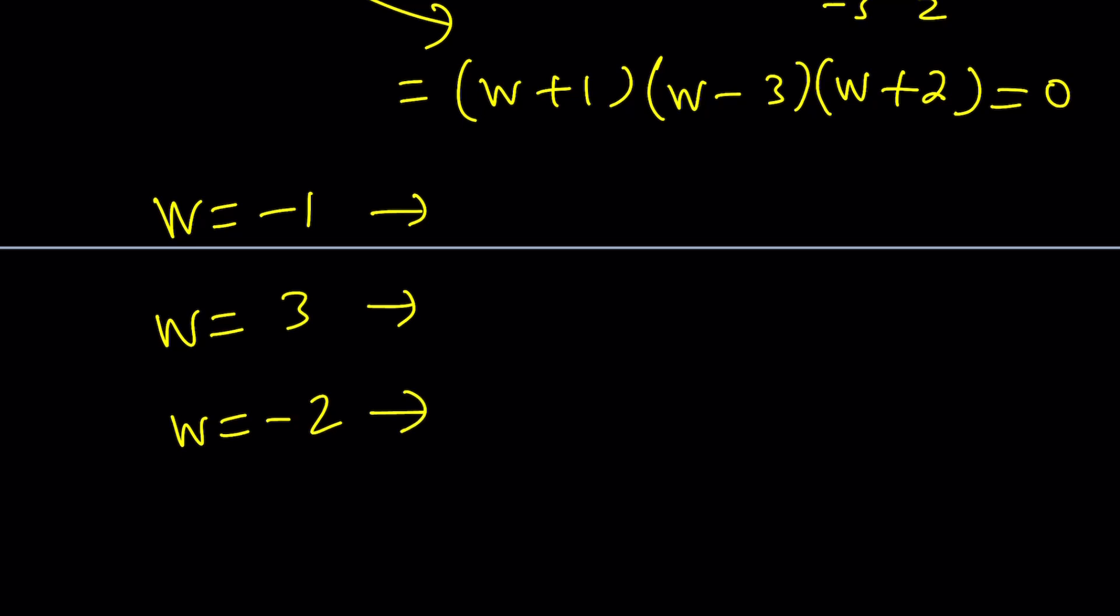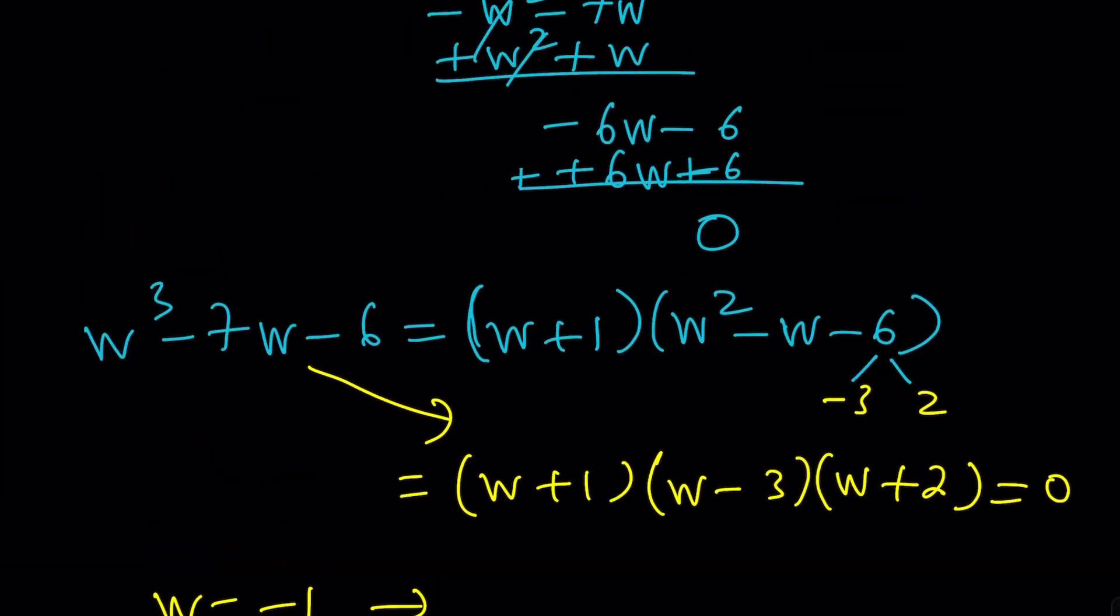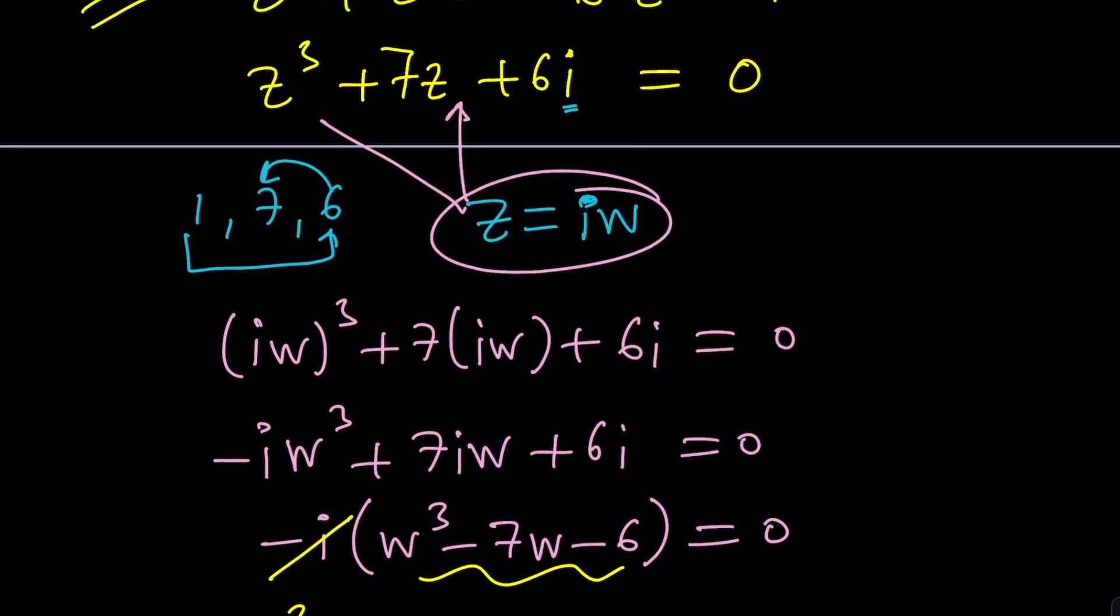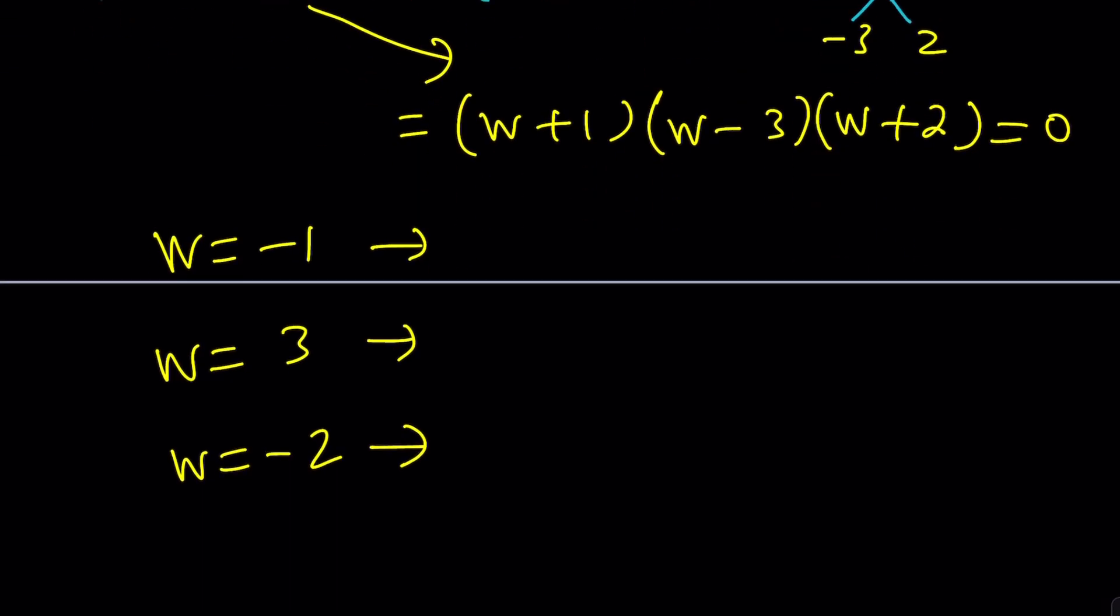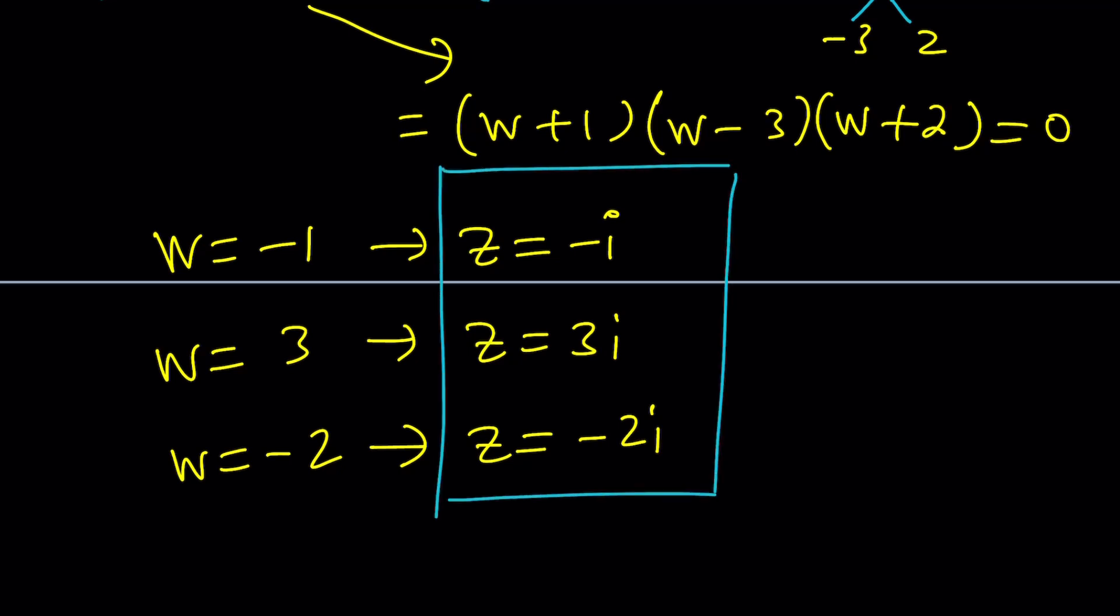What are the Z values? Well, Z is equal to IW. So, all we have to do is multiply these by I to get Z. In other words, Z could be negative I. Z could be 3I. Z could be negative 2I. That's what I meant by if the solutions are integer multiples of I, then we can do this. In this case, that happens to be the case.